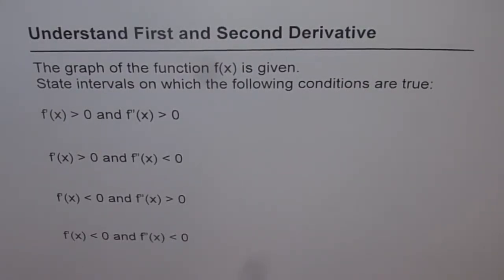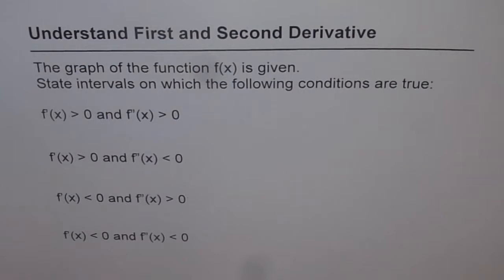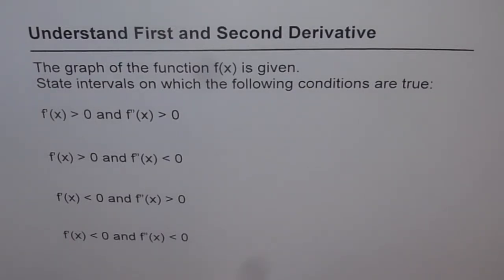Normally we try to find first and second derivatives to sketch the curve of a given function. This time we will reverse it — I will draw a graph and then you have to figure out in which interval the first derivative is positive or negative, and in which interval the second derivative is positive or negative. That will give you a good understanding of the relation between first and second derivatives and how they are represented on the graph of the function.